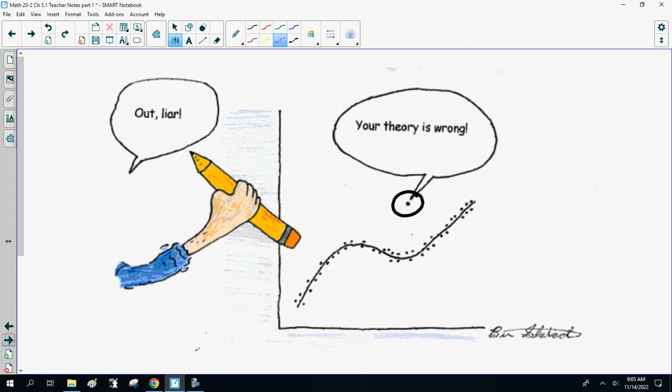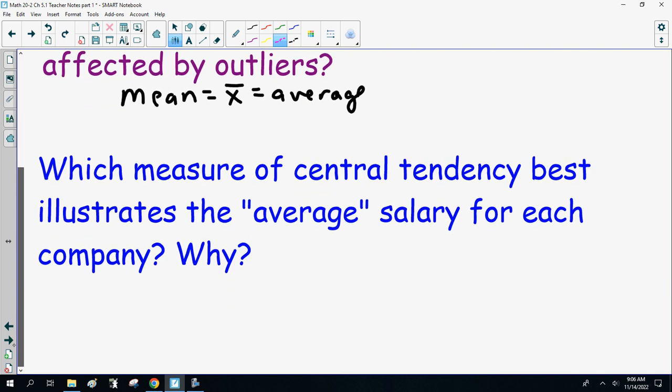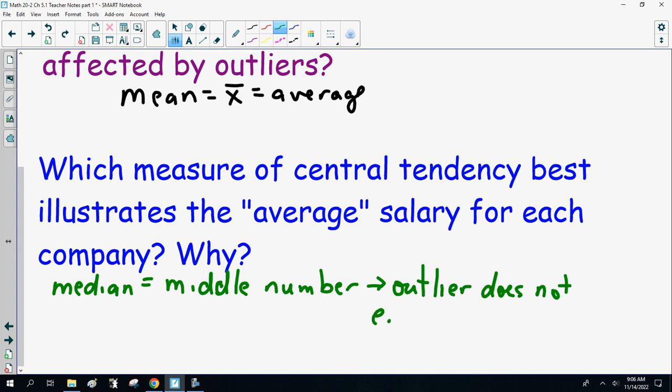Now, which measure of central tendency best illustrates the average salary for each company and why? This is one of those, you have to explain. My thought is the median. It's the middle number. Because the outlier does not affect it.